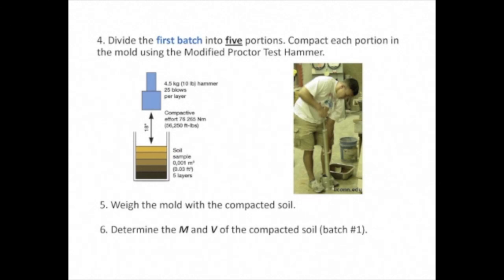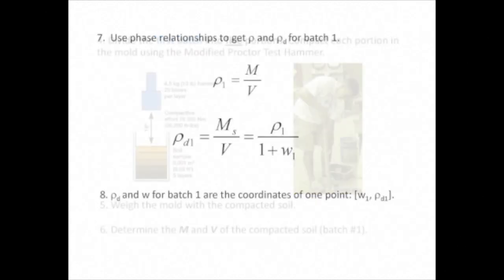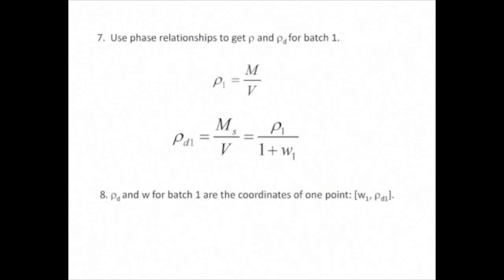Once finished, we scrape off the excess soil that protrudes from the top of the mold and weigh the mold with the soil inside. The mass of the soil, m, is the mass of the mold and soil minus the mass of the mold alone. The volume of soil is the volume of the mold — one-thirtieth of a cubic foot. The mass density of the compacted batch is mass divided by volume, and the dry mass density is the mass density divided by 1 plus the water content of that batch. This gives us one data point: water content and dry mass density for batch number 1.